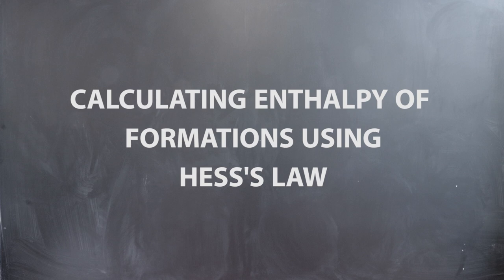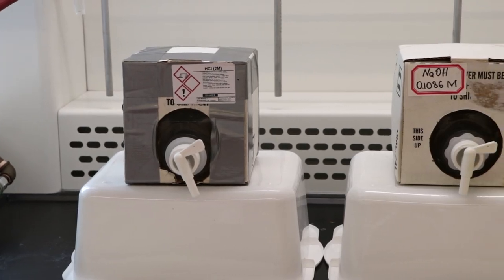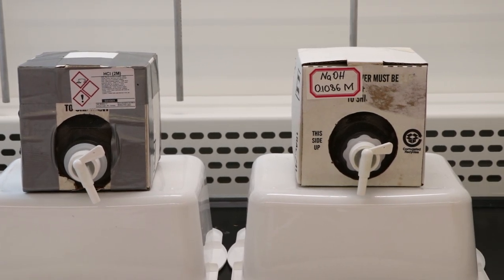Calculating enthalpy of formations using Hess's law. This is the equipment needed for part one of the experiment. All the materials can be found in your locker, otherwise the TA will provide it for you. The chemicals needed for this part are HCl and NaOH and they will be provided to you by your TA.